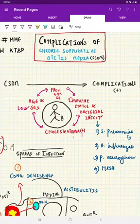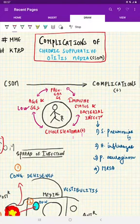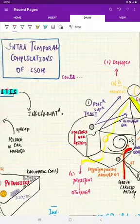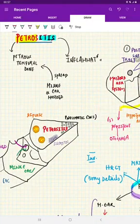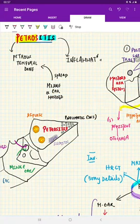Welcome back to Medicine Made Easy with me, Kaveh Tendral. We'll be continuing the complications of chronic suppurative otitis media, specifically the intratemporal complications. Petrositis—the name itself indicates inflammation of the petrous part of the temporal bone.